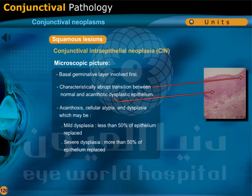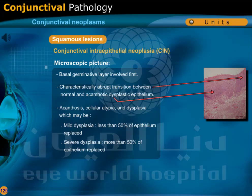The basal germinative layer is involved first. Characteristically, there is abrupt transition between normal and acanthotic dysplastic epithelium. Acanthosis, cellular atypia, and dysplasia occur, which may be mild dysplasia — less than 50% of epithelium replaced — or severe dysplasia — more than 50% of epithelium replaced.